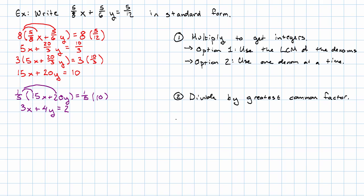And then our last step is to notice that the coefficient of x is already positive. So, we don't have to do any work to make that happen. Our answer, then, is 3x plus 4y equals 2. And that's in standard form.